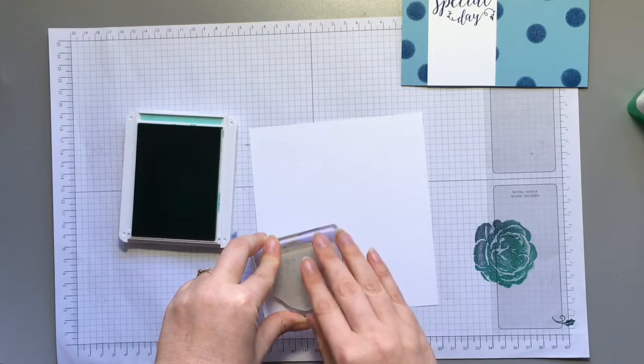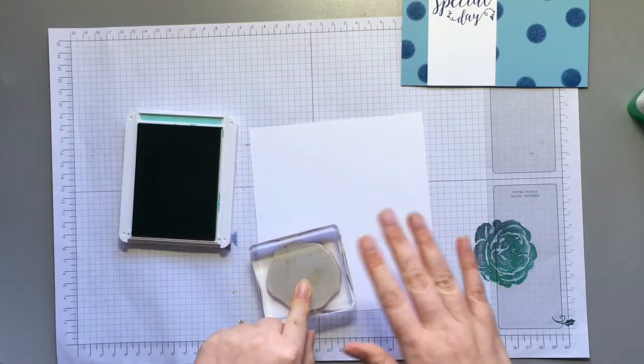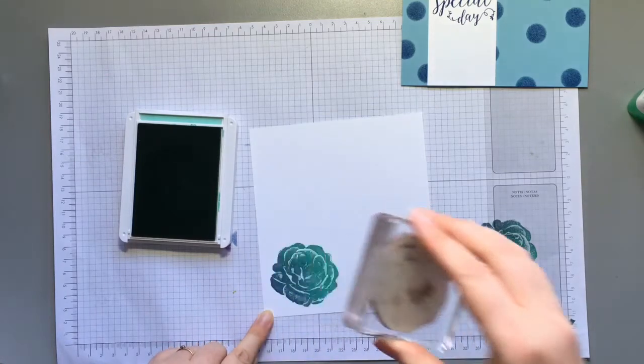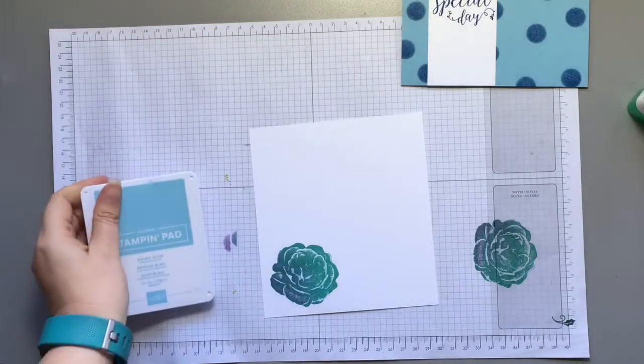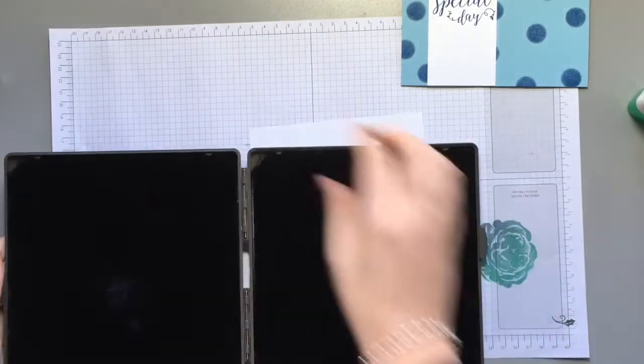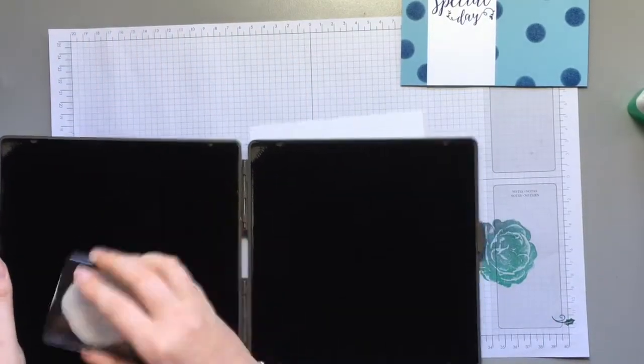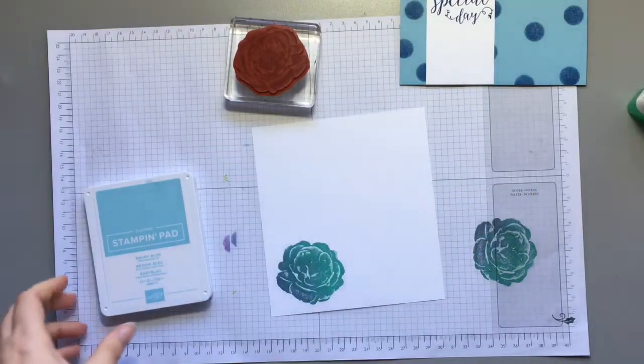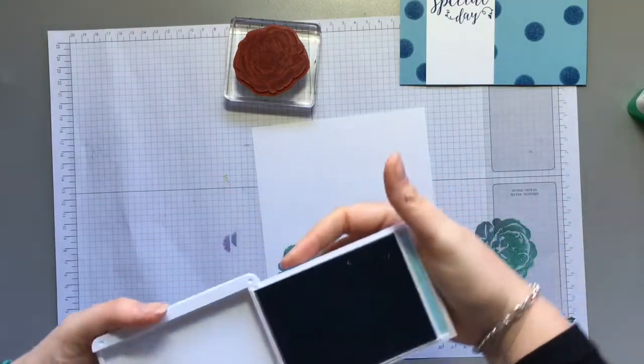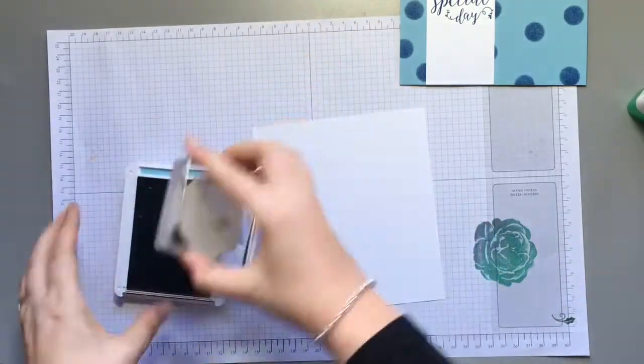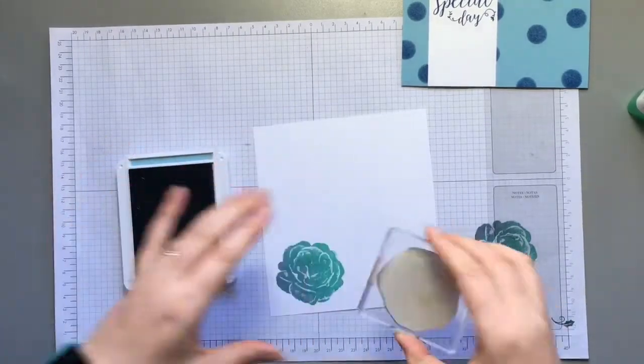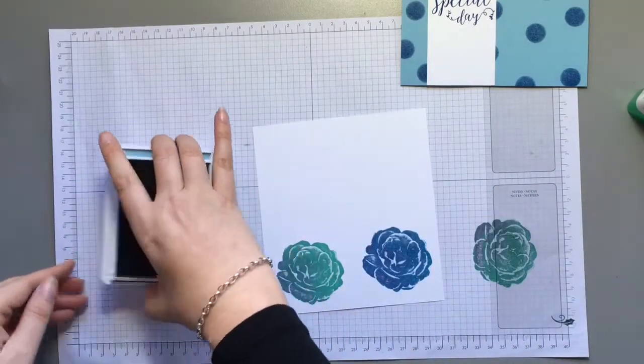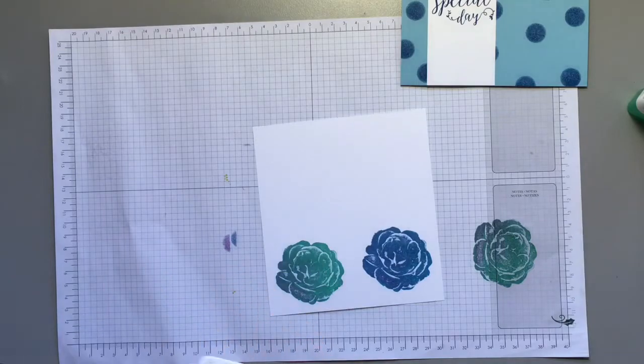This is what's called a distinctive stamp which means it gives us variations in the image without having to do any work at all. I don't really like the Coastal Cabana color so what I'm going to do is I'm just going to clean my stamp and I'm going to do it in Balmy Blue which is the same color as my card base. I think that might go better with my card.